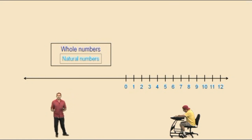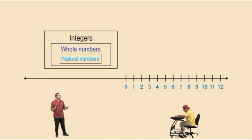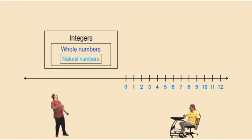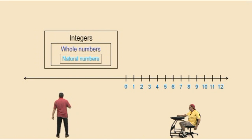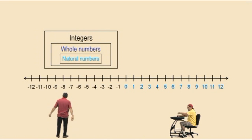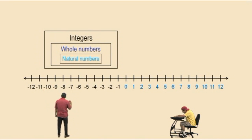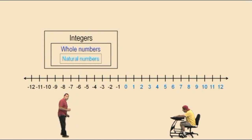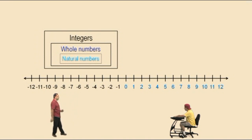Our next set of numbers are called the integers. The integers bring in the negative numbers. All right, let's go ahead and put our negative numbers on our real number line — and there they are right there. So the integers are the set of numbers that we mark our real number line with. And within the set of integers are the whole numbers and, obviously, the natural numbers.